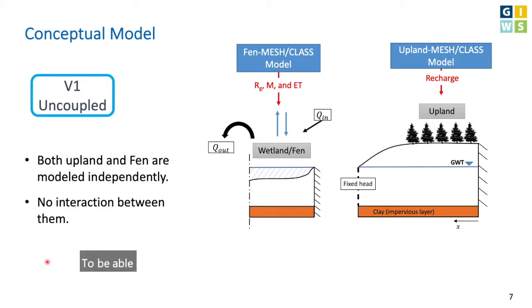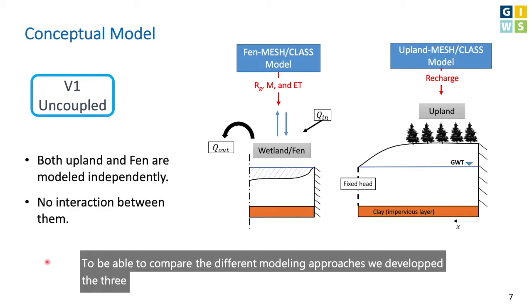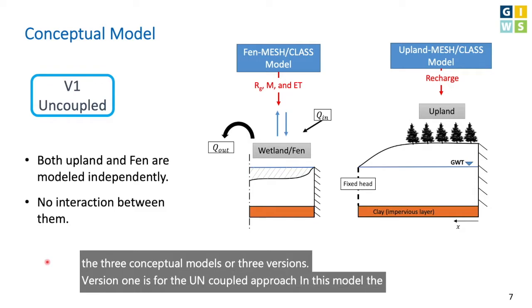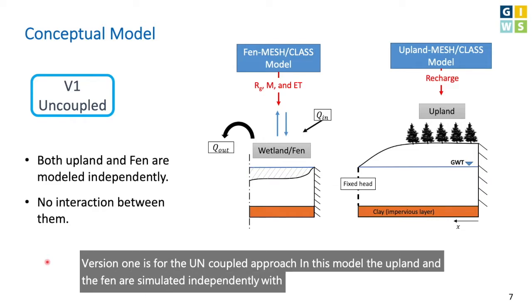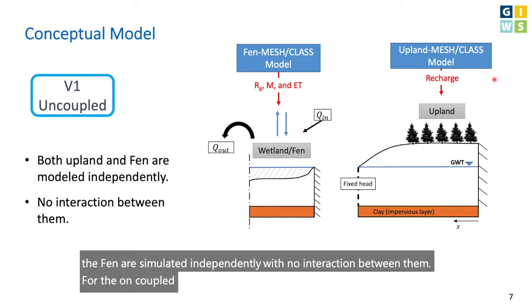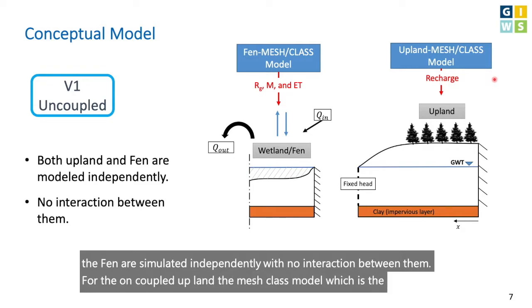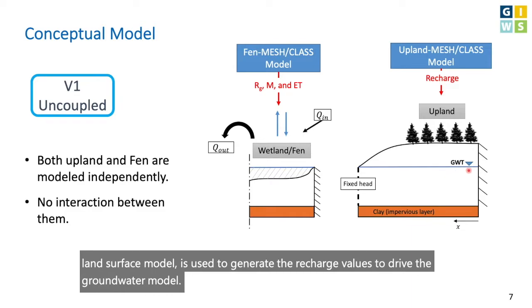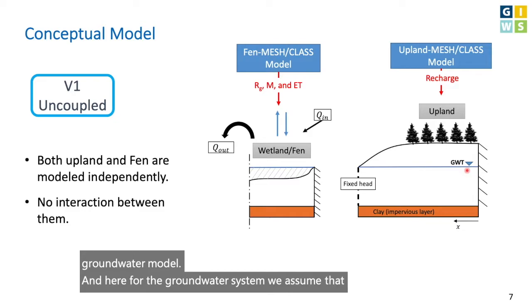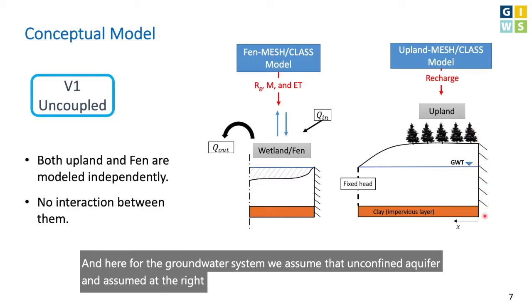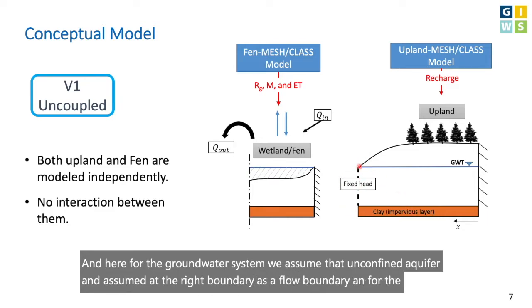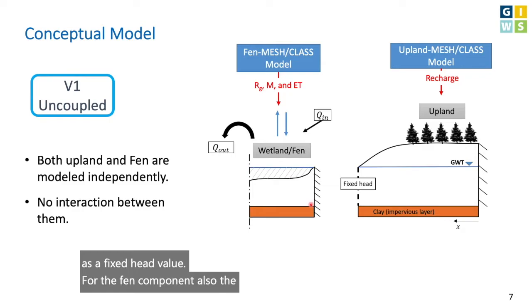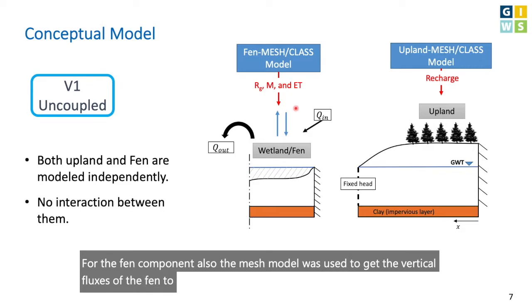To compare the different modeling approaches, we developed three conceptual model versions. Version one is the uncoupled approach, where the upland and fen are simulated independently with no interaction. For the uncoupled upland, the MESH model — the Canadian land surface model — is used to generate recharge values to drive the groundwater model. We assumed an unconfined aquifer with a no-flow boundary on the right and a fixed head value on the left. For the fen component, MESH was also used to obtain vertical fluxes for the fen water balance simulation.